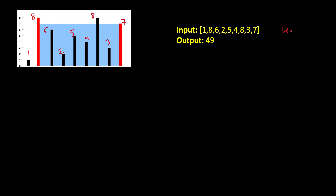You want to store the maximum volume of water, so you choose one left bar and one right bar. You start with the first bar on the left and the rightmost bar. The width here is 9 minus 1 = 8, because with nine bars the width between first and last is eight.